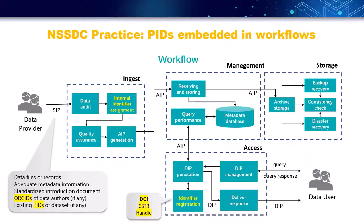When a dataset is released and it doesn't have existing PIDs, the internal identifier is used as a suffix to generate the full PID name. This PID is then registered via API interfaces provided by services such as CNKI DOI and the Data PID.